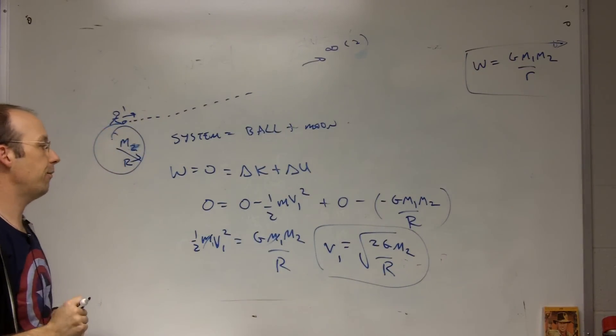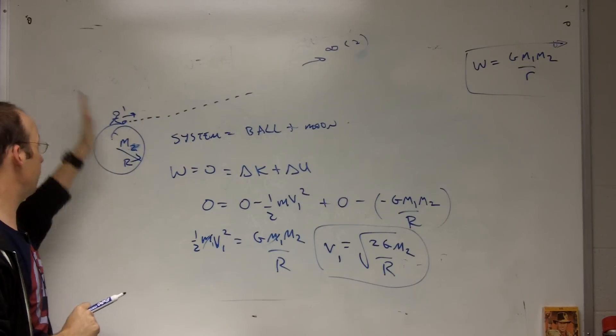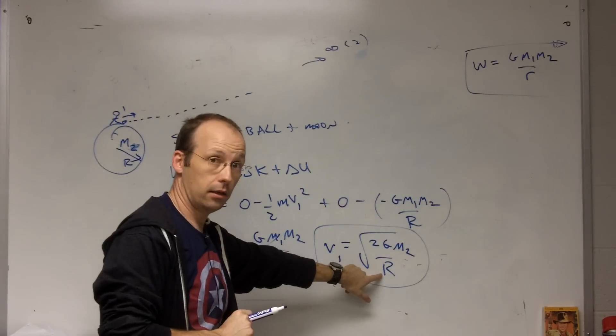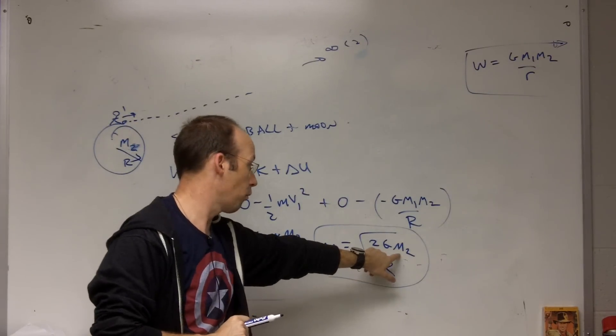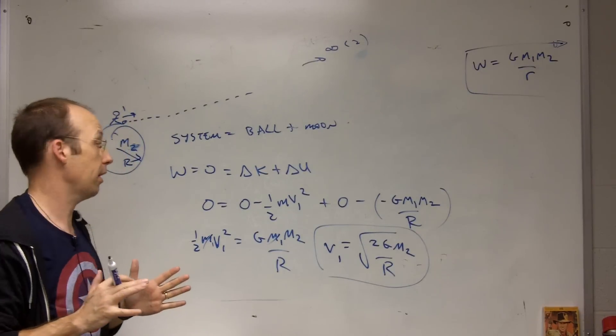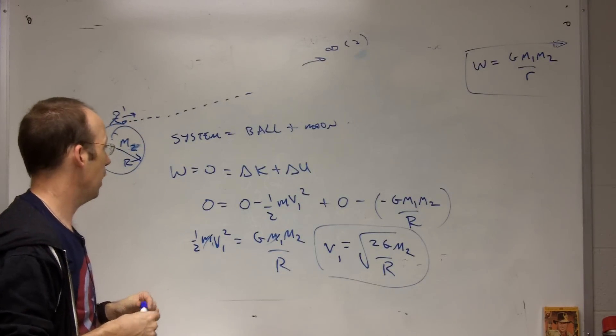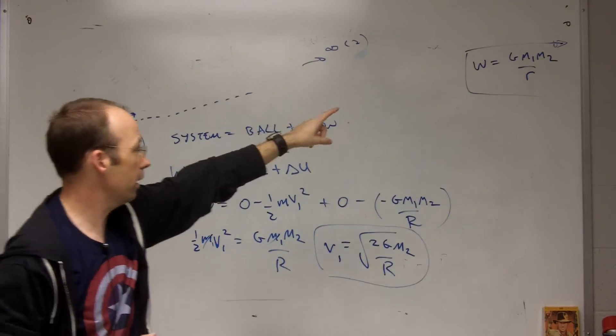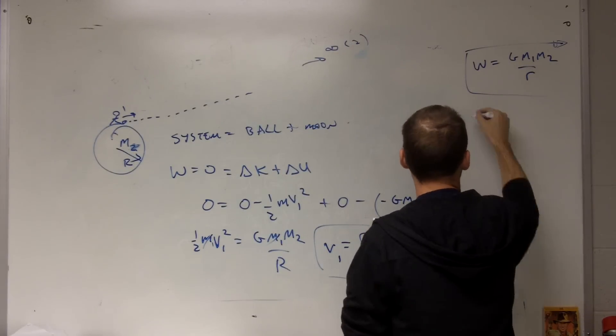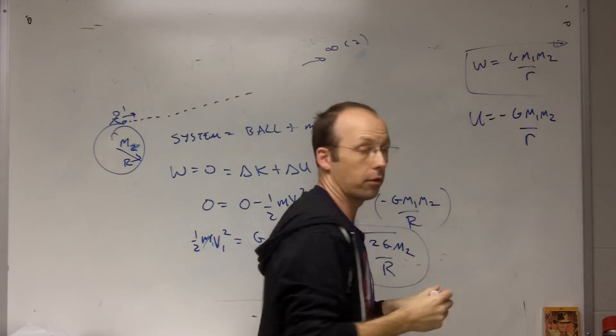This is called the escape velocity. Escape velocity. And it doesn't matter what direction you hit this at. It only matters about the speed. And so a bigger planet is easier to escape from. A more massive planet is harder to escape from. So just because something smaller doesn't mean it's easier to escape from, because it depends on the mass too. Okay, I know I went kind of quick, but I mean really this work and the potential being negative of that is the most important thing.